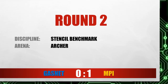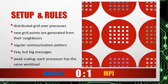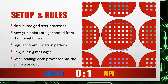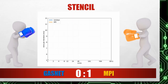Let's continue with round number two: the stencil benchmark. Here we distribute a grid over many processes and generate new grid points out of their neighbors. This is a very predictable communication since we transfer the edges of each part to its neighbor process with a few but big messages. We scale the number of cores so that the workload for each process stays the same. We see a big increase at the beginning, but then both stay nearly constant, as expected for weak scaling. Their performance is very similar, so there is no clear winner here — each gets a half point.